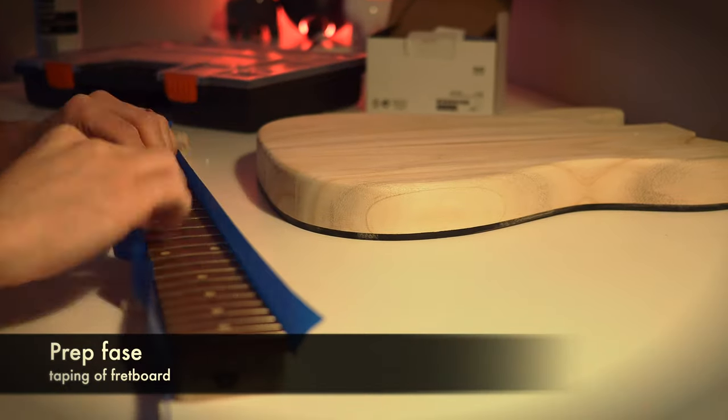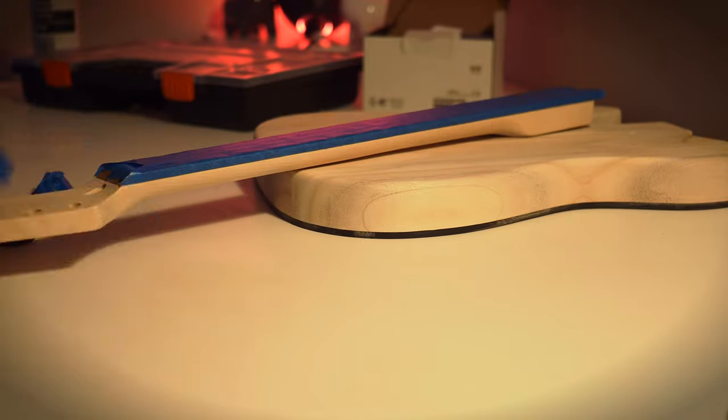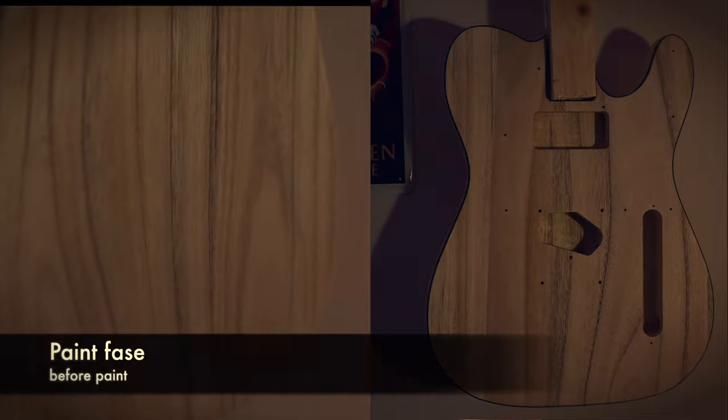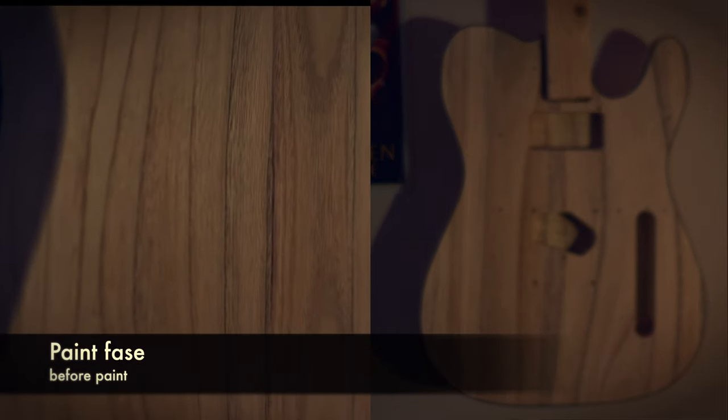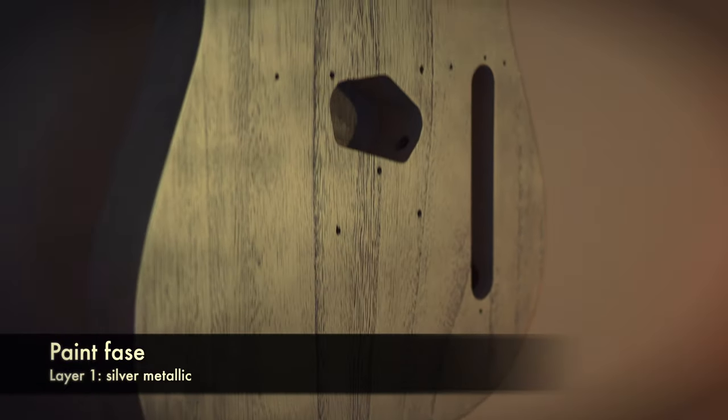I could then mask off the fretboard and it was ready for paint. I didn't bother masking off the binding, so I wanted to scrape it off anyway. The first layer that goes on is just a silver metallic. This will later make the transparent candy apple red pop out.